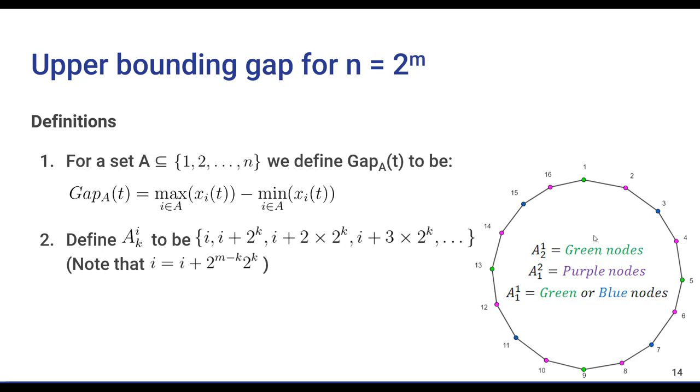For example, here you can see the elements of A(2,1) colored in green. These elements are elements we will go through if we start from node 1 and start jumping around with jump sizes of 4. So we will go through 5, then 9, then 13, and then back to 1.